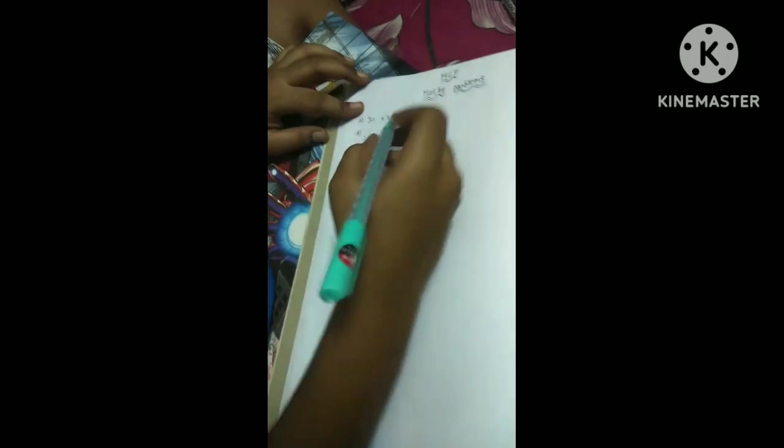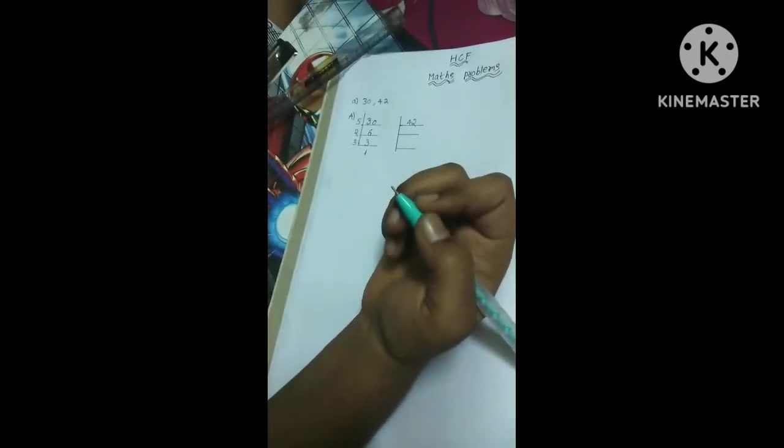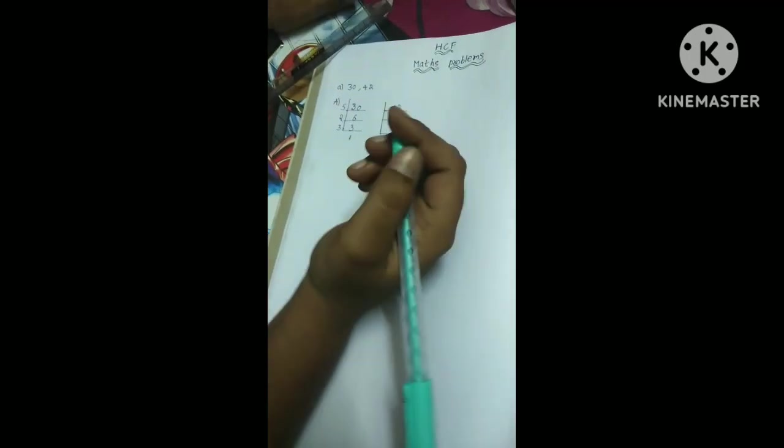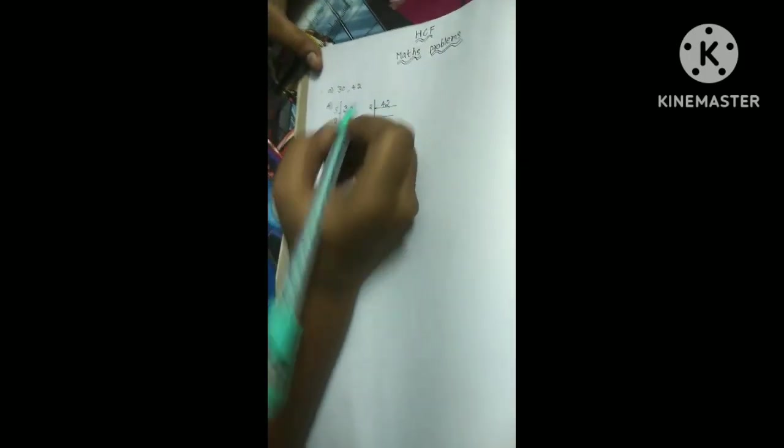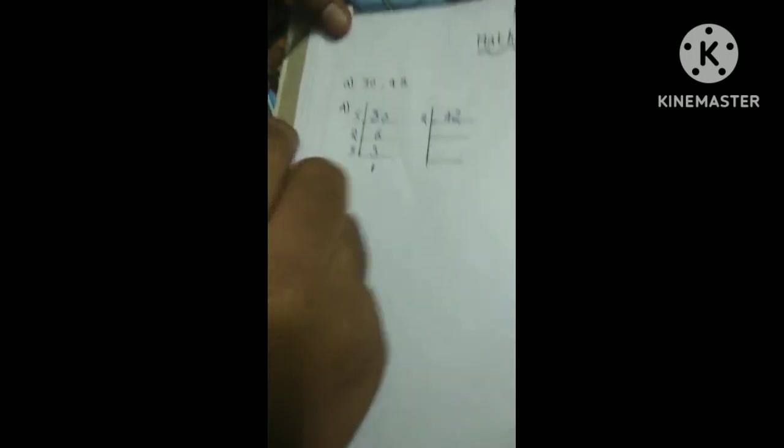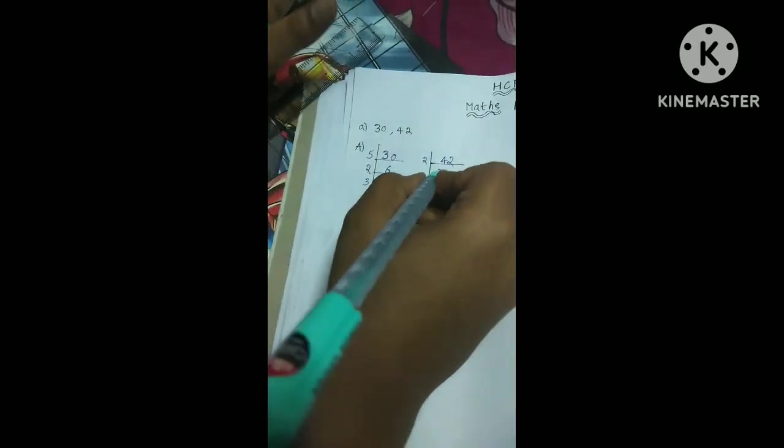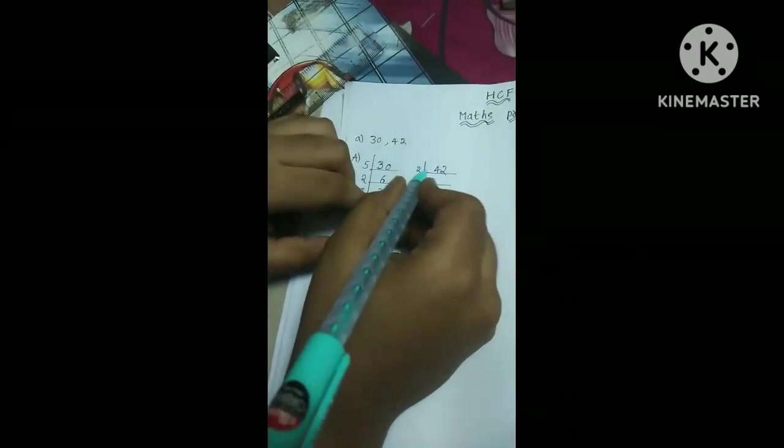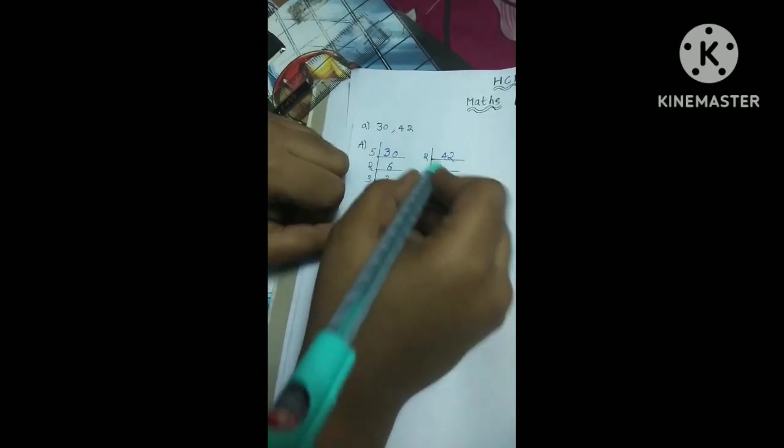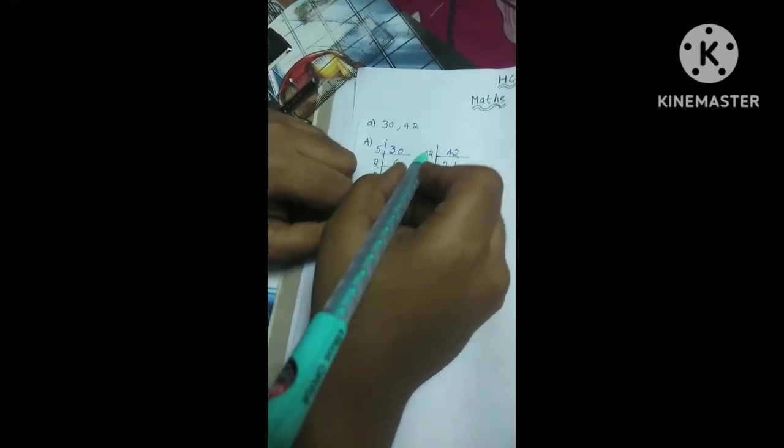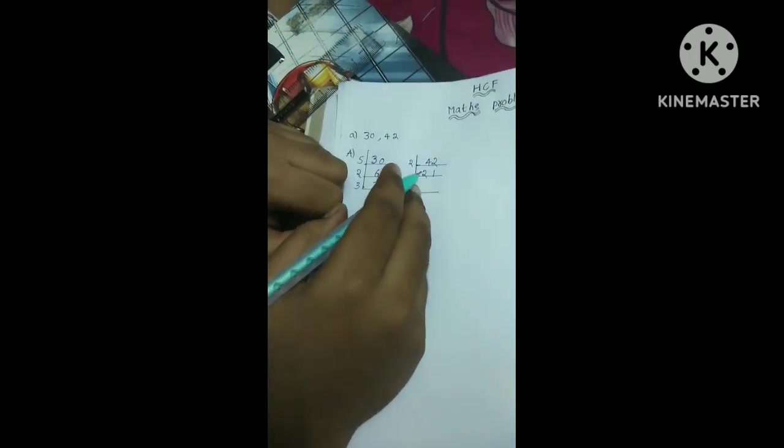Now, 42. 42 in which table will come? Will not come up to 9. That's why we should take 2 table. Singularly also we can do. Now, 2 times 1 is 2, 2 times 2 is 4. 2 times 1 is 2. Next.